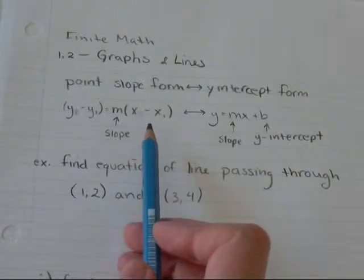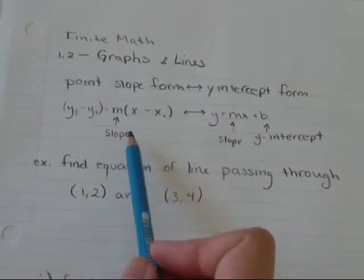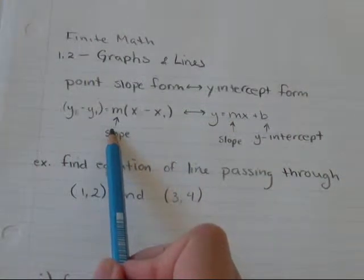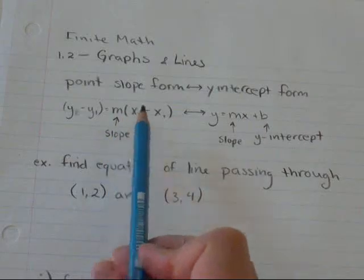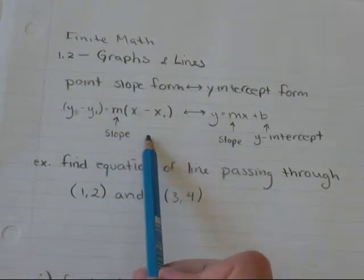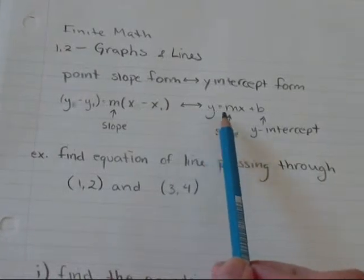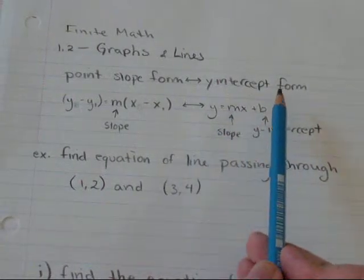And why the point-slope formula is so useful is it tells you that if you know the slope of a line in any point at all on that line, you will be able to come up with an equation of the line. And usually, when you have that form, if you want to draw it by hand and graph it, you will change it into y equals mx plus b or y-intercept form.